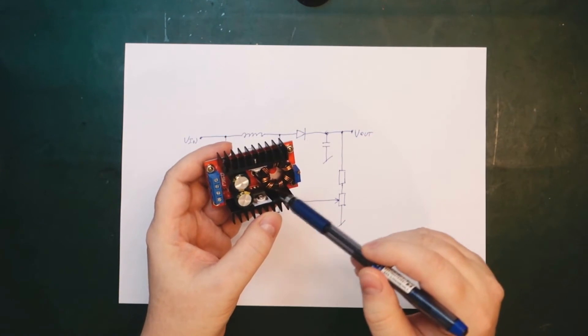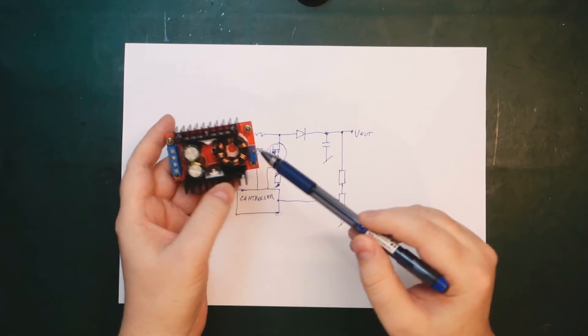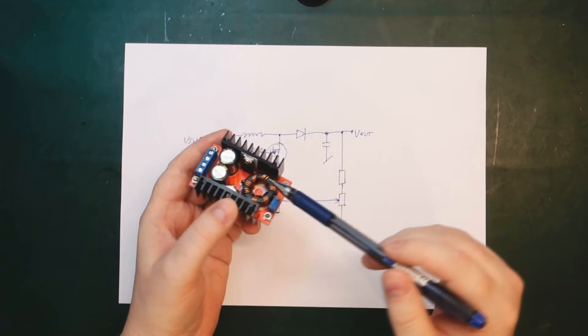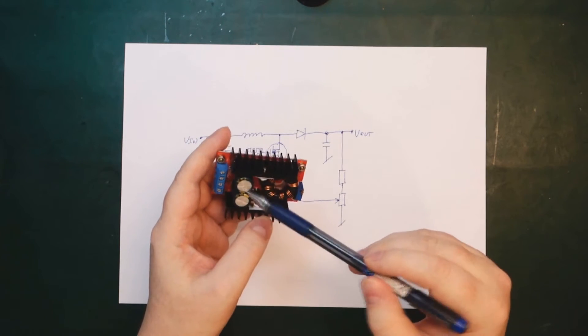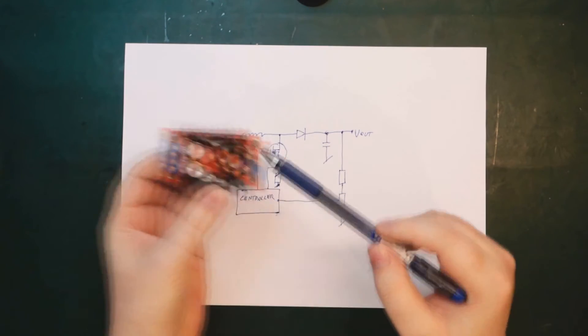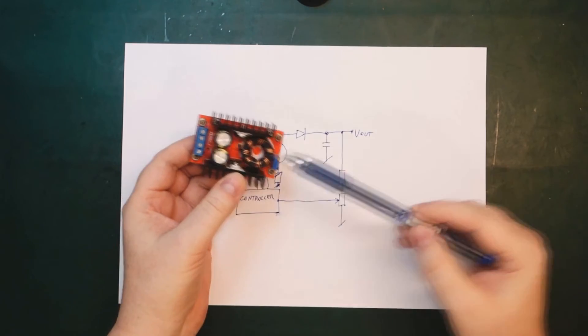The inductor is quite easy. This is the inductor we have here. And our adjustment potentiometer here. Then we have this one is the input capacitor here. Output capacitor here.